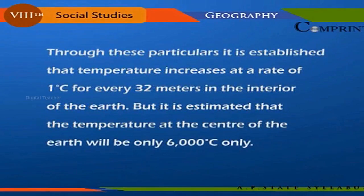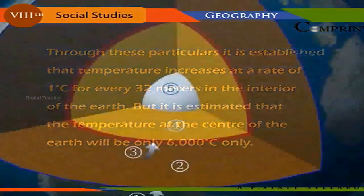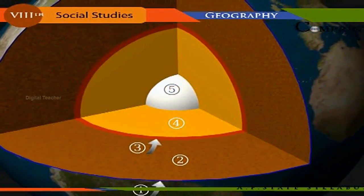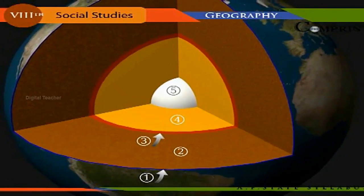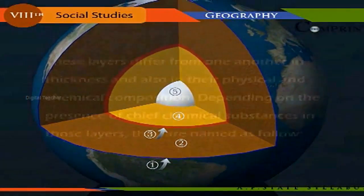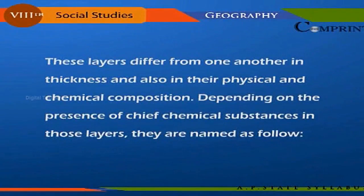Through indirect evidence it is established that temperature increases at a rate of one degree centigrade for every 32 meters in the interior of the earth, but it is estimated that the temperature at the center of the earth will be 6000 degrees only. There are several layers in the earth; the materials in the upper layers differ from those of the lower layers in thickness and in their physical and chemical composition. Depending on the chief chemical substances present, these layers are named as follows.